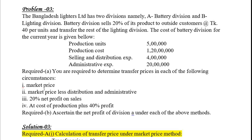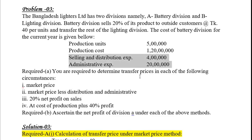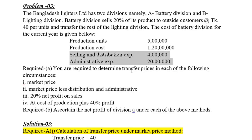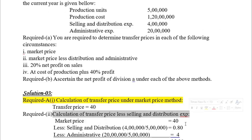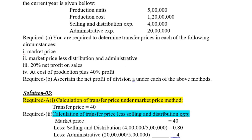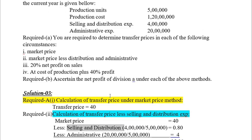For method two, the transfer price is market price less selling and distribution expense. When selling to the outside market, distribution and administrative expenses are incurred. So the transfer price is calculated as market price of Taka 40 less selling and distribution expense and administrative expense.